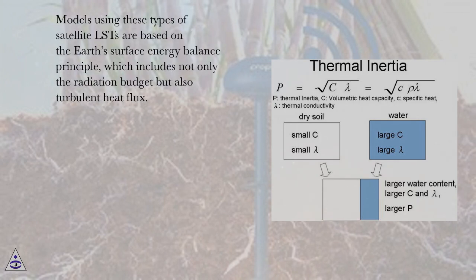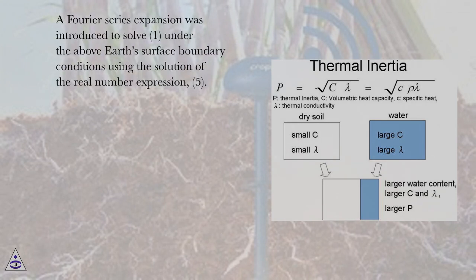Models using these types of satellite LSTs are based on the Earth's surface energy balance principle, which includes not only the radiation budget but also turbulent heat flux. A Fourier series expansion was introduced to solve Equation 1